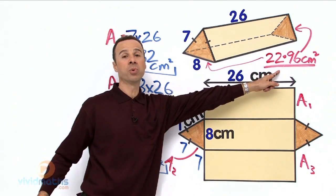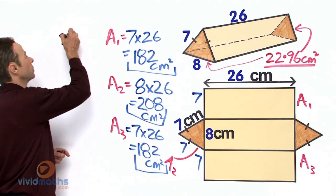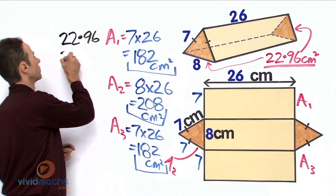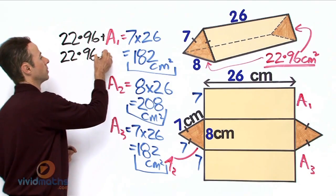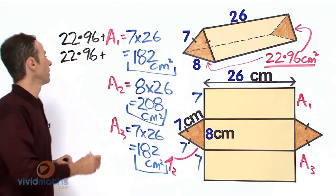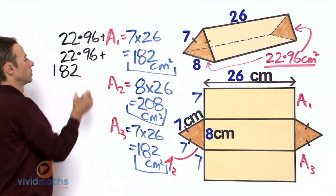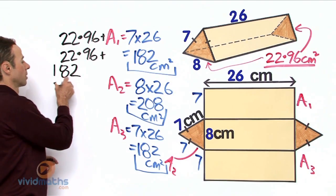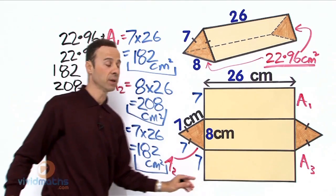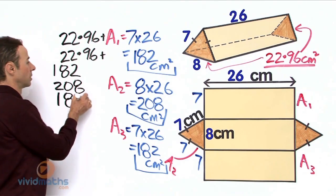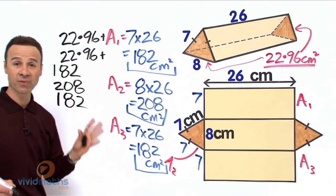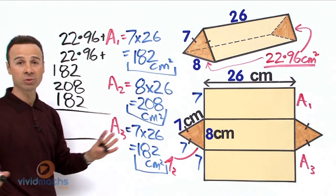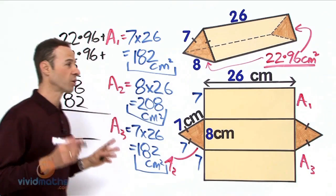From the front face we have 22.96, and the back face is also 22.96. Then Area 1 is 182, Area 2 is 208, and Area 3 is also 182. Let us check that we have 5 amounts for 5 faces — 1, 2, 3, 4, 5 — yes. The grand total surface area of this triangular prism is the sum of all five values.